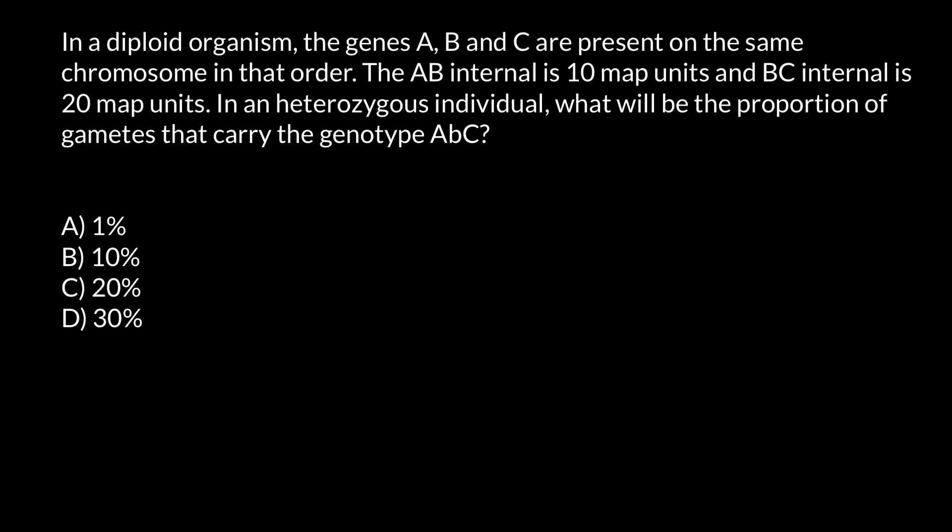We have one chromatid here and another homologous chromatid. During meiosis, we have location for gene A here, gene B here, and gene C here. But on the other homologous chromosome, at the same loci, we may have different alleles. For example, recessive allele a here, recessive allele b here, and recessive allele c here.